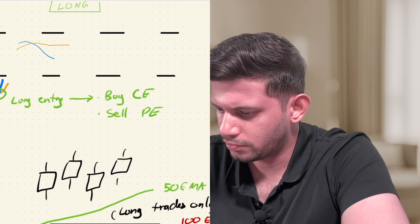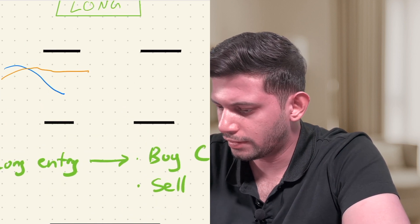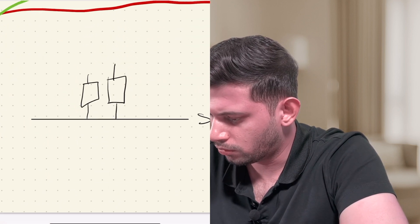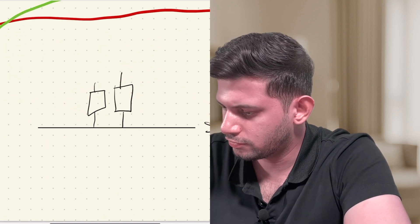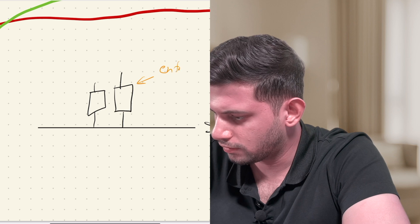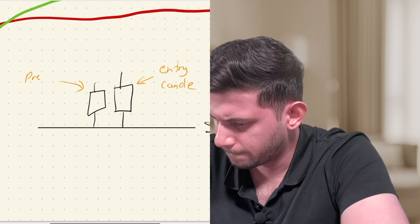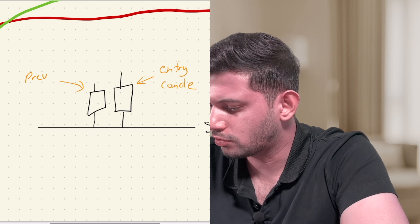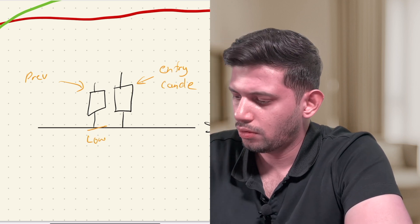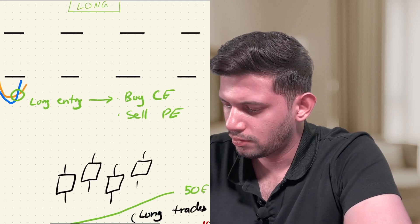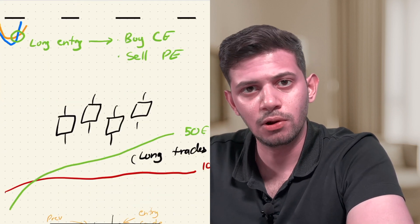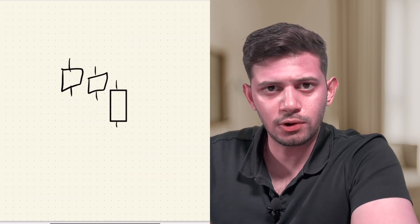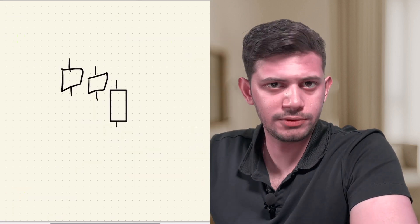When the blue line crosses below the orange line in the stochastic — that is also a stop loss condition. So for the long trade, the exit is triggered either by the low of the previous candle being breached, or by the blue line crossing below the orange line in the stochastic indicator. Now for the short signal, it's going to be the exact opposite of the long signal.